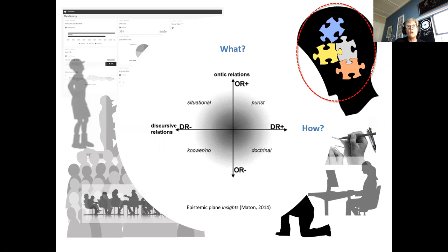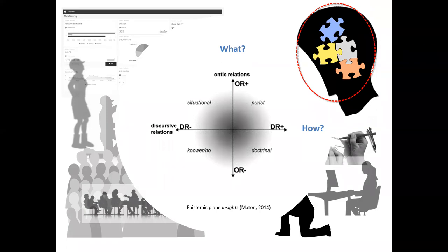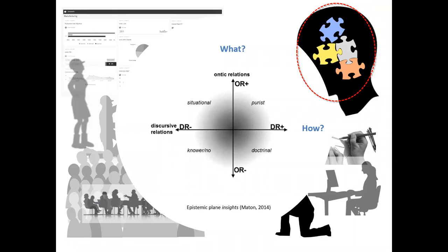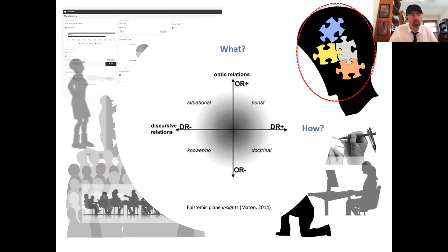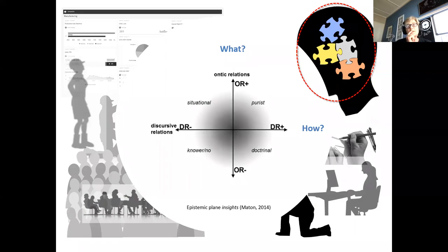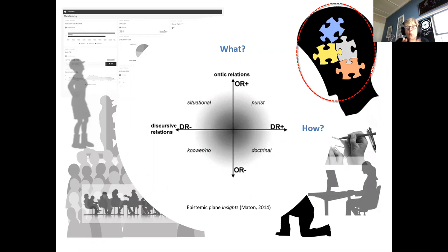The epistemic plane is about the what and how - thank you for the introduction, because I think a lot of people don't know this one. It's a bit of an esoteric part of the framework. A friend of mine didn't actually want me to write it into Knowledge and Knowers because he said it was a bit too esoteric, but I said if it doesn't get into Knowledge and Knowers it's never going to be published anywhere. The epistemic plane is about the what and how of a knowledge practice - what concept, object, process, or phenomenon is the focus of a practice.